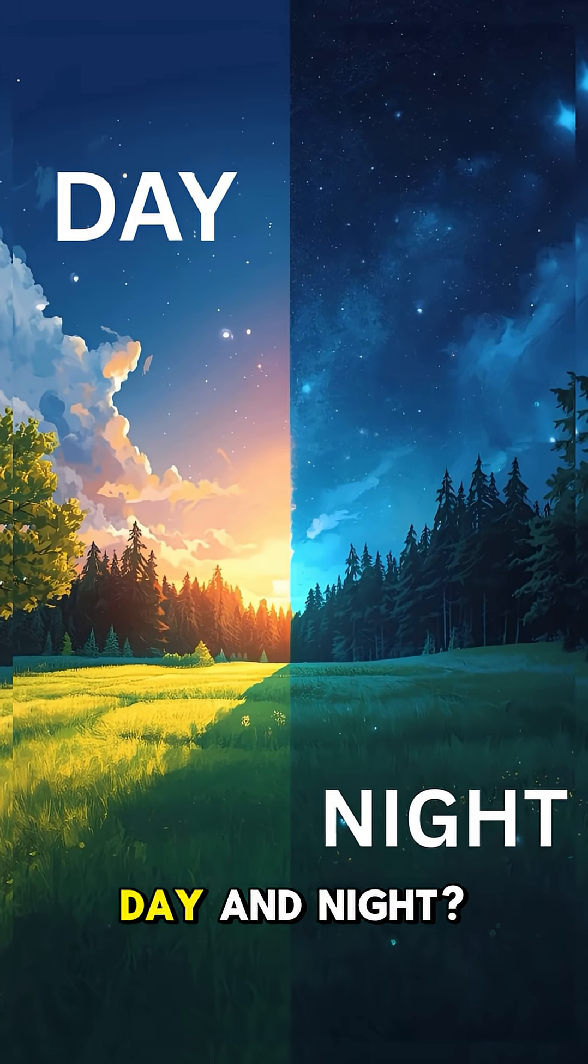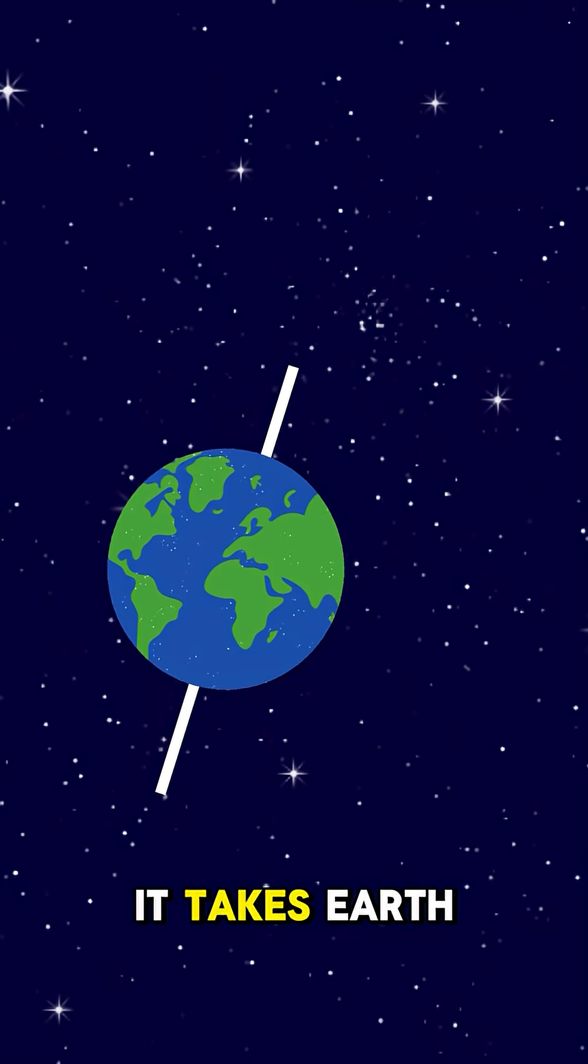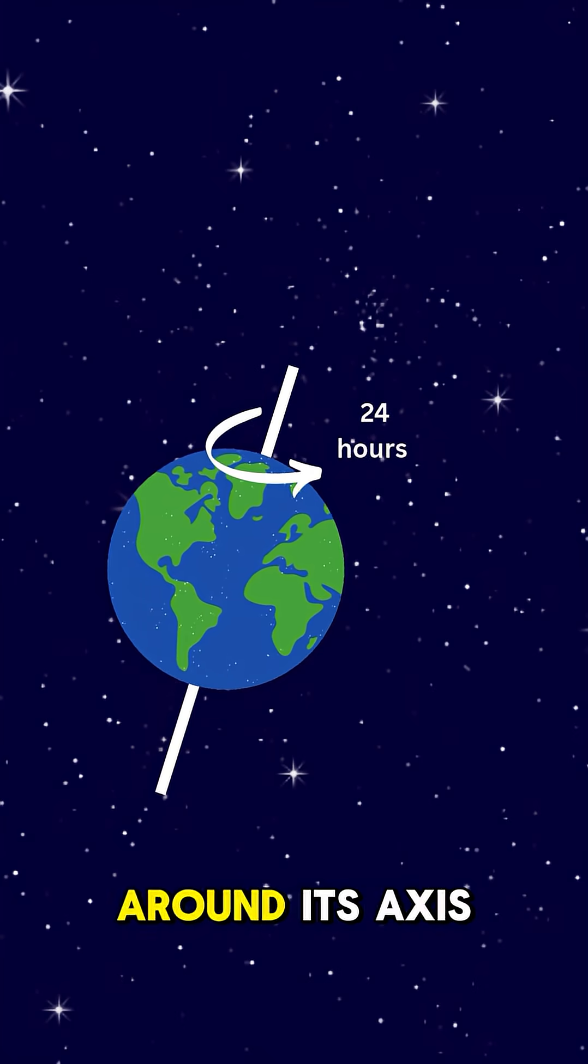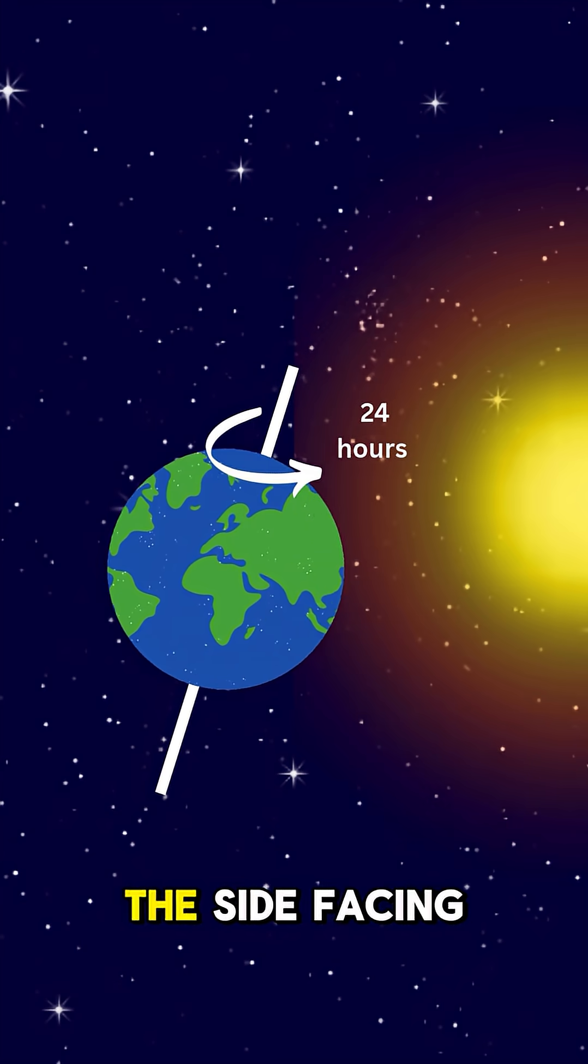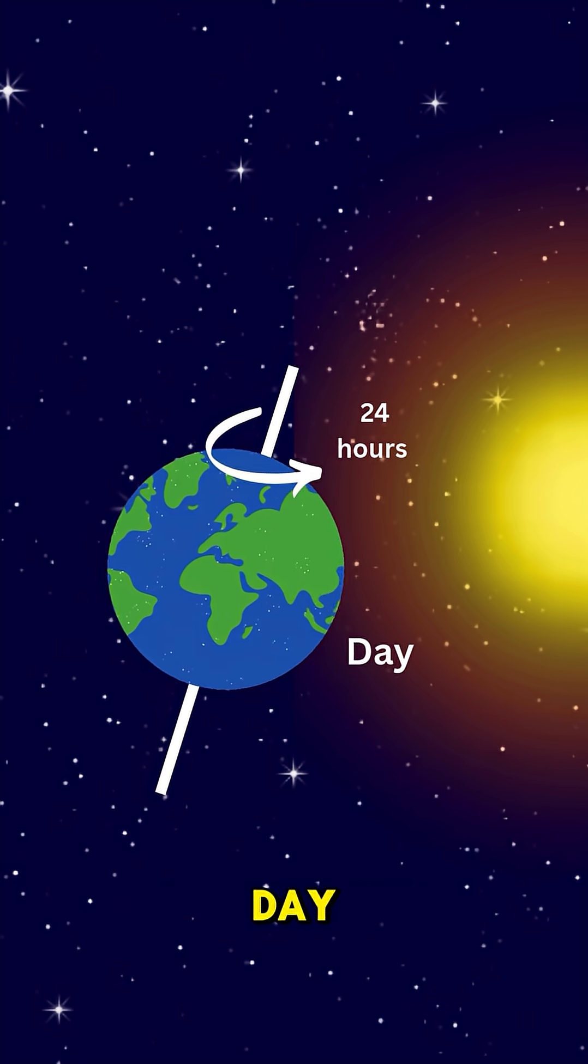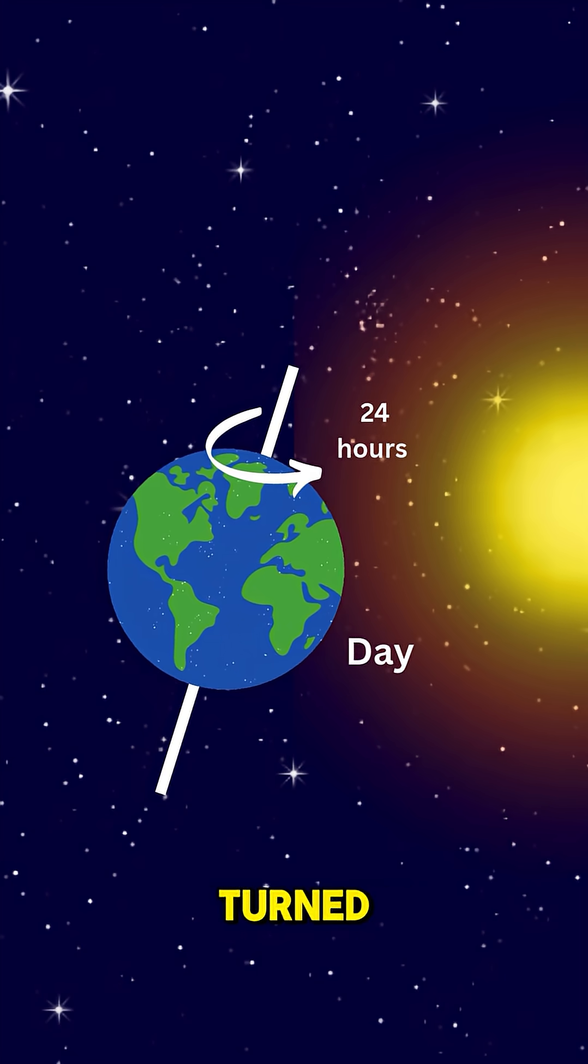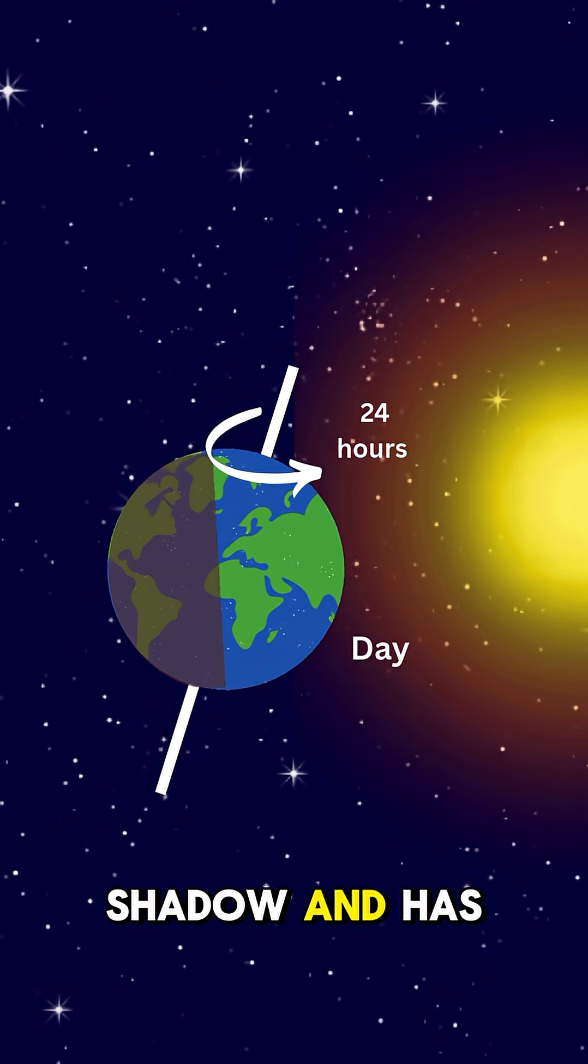Why is there day and night? It takes Earth about 24 hours to spin once around its axis. The side facing the Sun has day, while the side turned away is in shadow and has night.